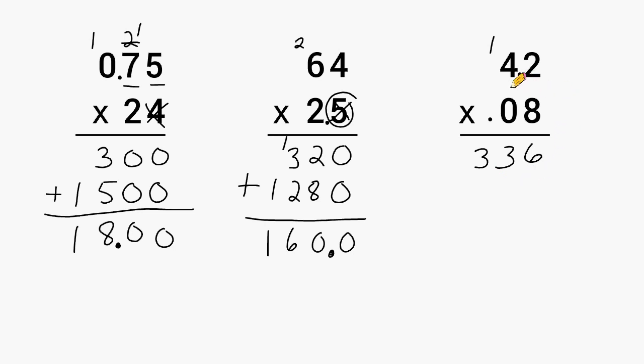Now in the problem, we have two decimal points. And after this decimal point, we have one place value. And after this decimal point, we have two place values for a total of 1, 2, 3 place values. So we go to our answer down here and then we move to the left 1, 2, 3 place values. There's nothing in front of this decimal, so we can just stick a 0 there if we want to. So 4 and 2 tenths multiplied by 8 hundredths is 336 thousandths.